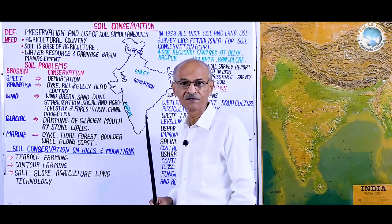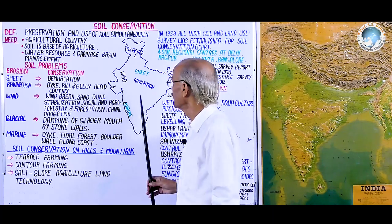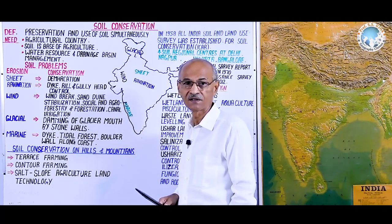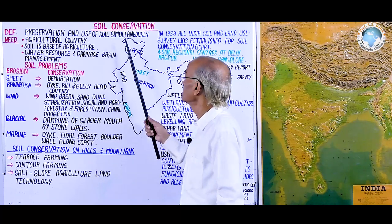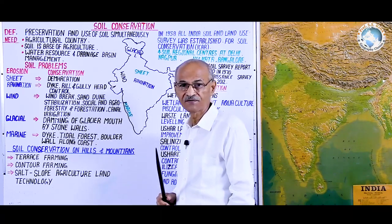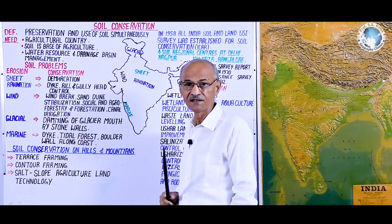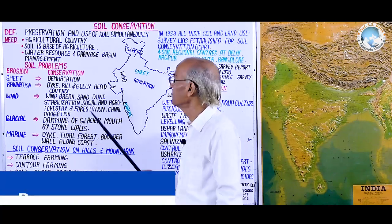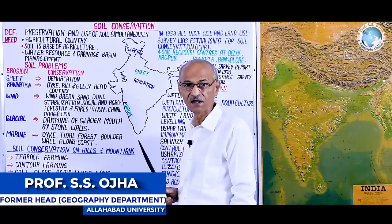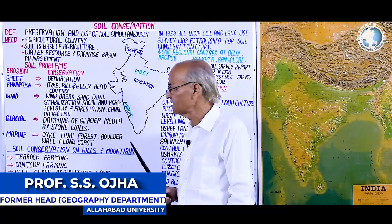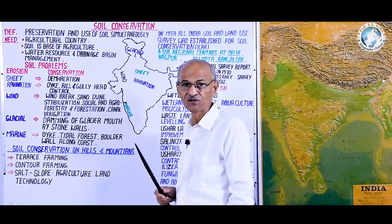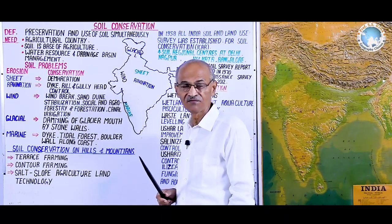Soil is a very important factor in India. Soil differs from land because on all land it is not compulsory that soil will be found, but soil certainly will be found on land. For example, in the Greater Himalayas it is land but soil is not found there because it is glaciated. Likewise, kachha areas are included in land but have no soil, or the soil is generally hydromorphic. Thus soil differs from land.